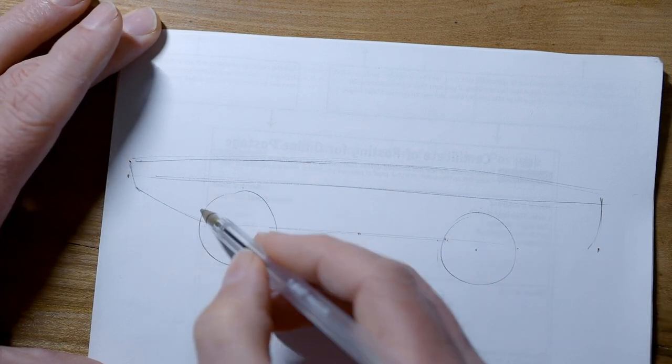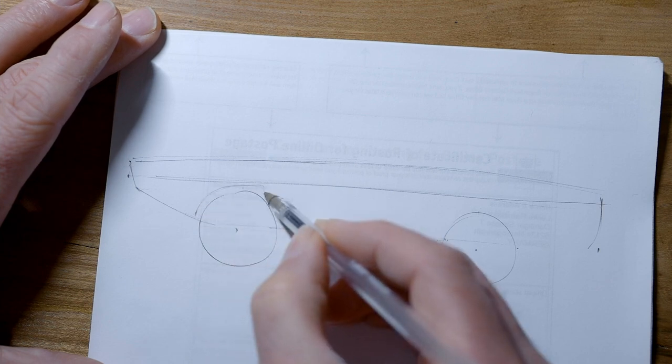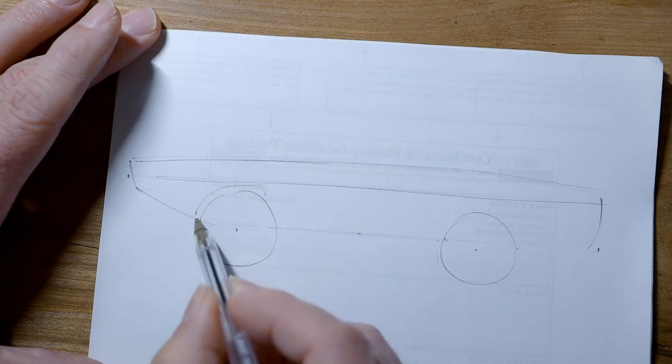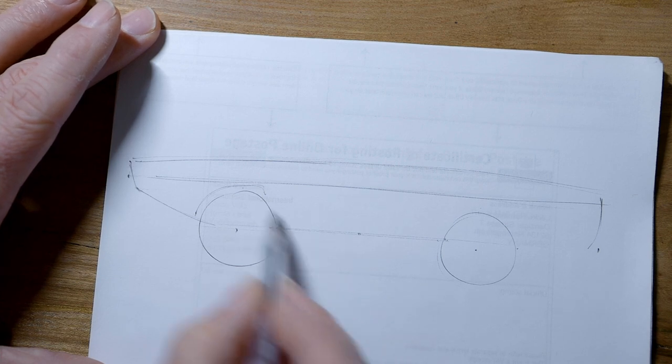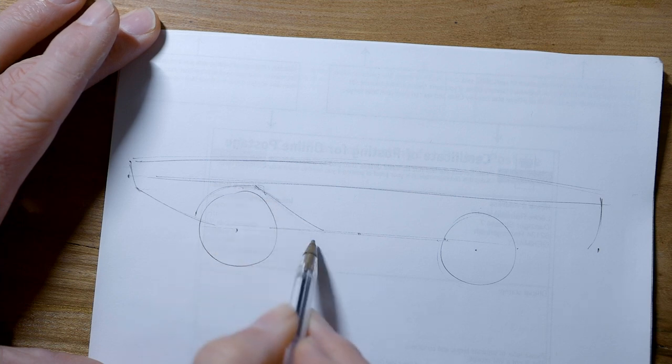So we'll do the front wheel arch first, because that's an easier one, that's just it follows the line of the front wheel for the first part. And then it has a nice sort of diagonal slope afterwards.